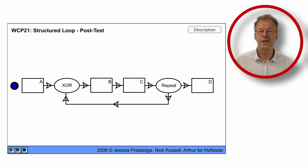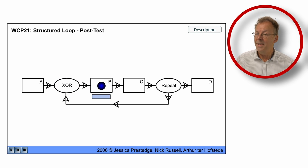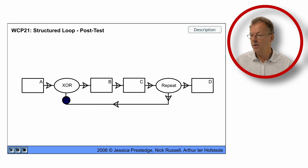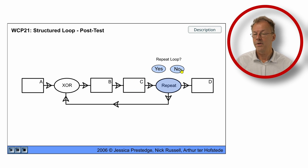The third one is for the structured loop with a post-test. We have A and we go to B and C without asking anything. And here we ask repeat yes. We go back to B and C. And we say no. And we finish with D.